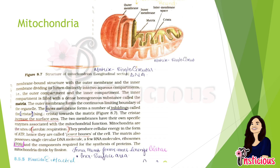Mitochondria are not visible under the microscope unless specifically stained. Mitochondria have different layers: the inner membrane forms inner lining called cristae — spelled C-R-I-S-T-A-E — which are present on the inner surface. In the middle there is a matrix. A single circular DNA is present in the matrix. This is a double membrane-bound structure with an outer membrane, inner membrane, matrix, and cristae.